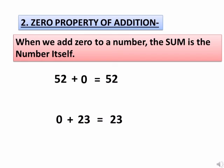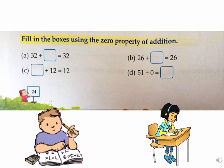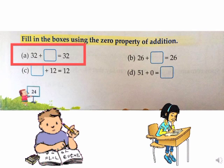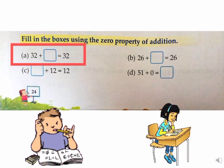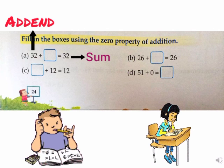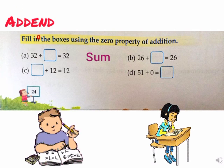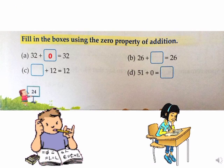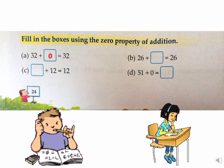Now, you will see the question given in your book on page number 24. See part A. Here, 32 plus blank is equal to 32. Remember, when the sum and addend are both the same, the number we add is 0. So, 0 should be added to 32 so that the sum is equal to 32.